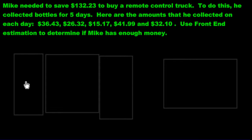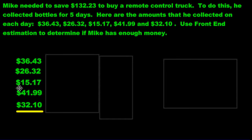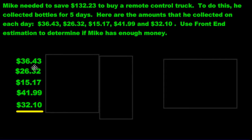So we'd stack them first of all and add them up. However, we need to change these numbers — we need to use our estimation strategies. So the 36 becomes 30. But wait, Mr. Mahlum, it's closer to 40. It doesn't matter because the strategy involves keeping the first number and turning everything else into zeros. It's a very simple strategy. You don't have to think about rounding up or rounding down.